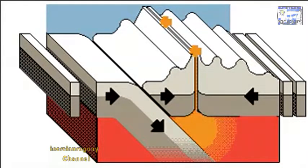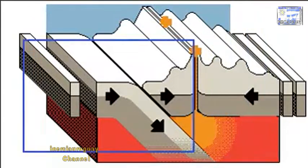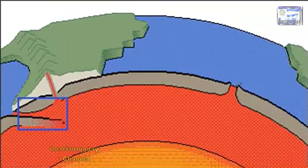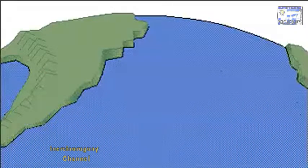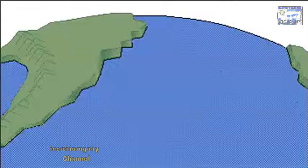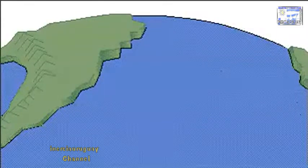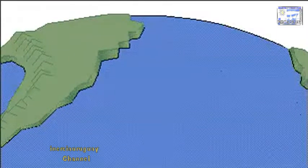Most volcanoes of the world lie along zones in which ocean plates plunge beneath continental plates. Plates in the Earth's crust move only a few centimeters a year. However, over the course of millions of years, the face of the Earth is transformed.